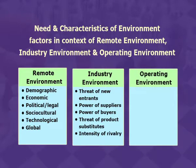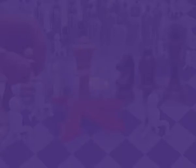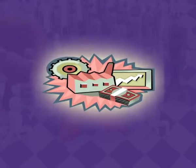The general environment shows dimensions in the broader society that influence an industry and the firms within it. Economic factors concern the nature and direction of the economy in which a firm operates. On both the national and international level, managers must consider the general availability of credit, level of disposable income, and the propensity of people to spend. They should also monitor prime interest rates, inflation rates, and trends in the growth of gross national product.